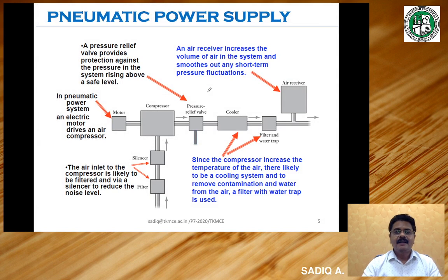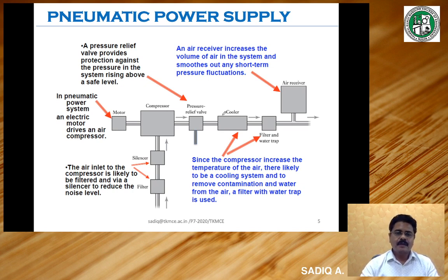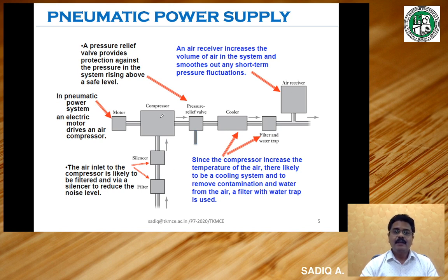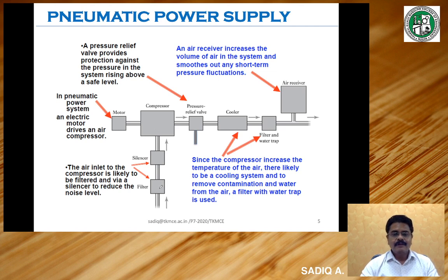Let us see the pneumatic power supply. It is meant for providing regulated pneumatic power to the external circuit. This consists of a filter, a silencer, a compressor driven by a motor, a pressure relief valve, a cooler, a filter and water trap, and an air receiver. When compared with the hydraulic power supply, instead of a pump we use a compressor because in a pneumatic circuit we use compressed air or gas for actuation. Compressed air is developed by means of a compressor. There is a filter to filter out any dust or particles entering the system.